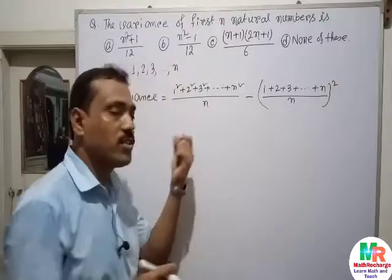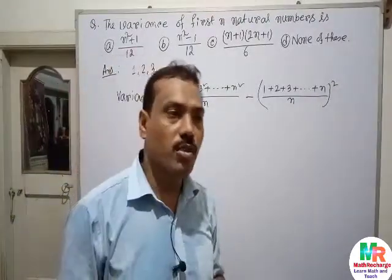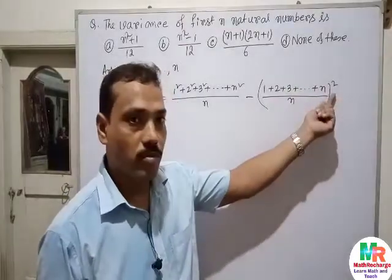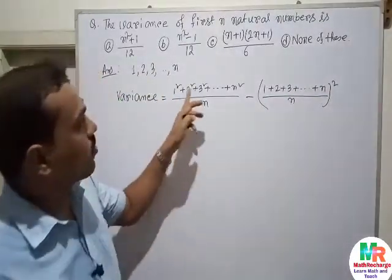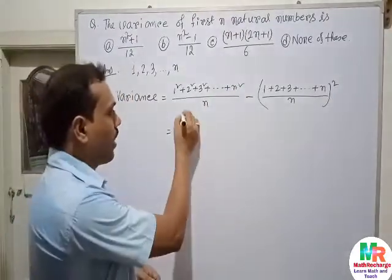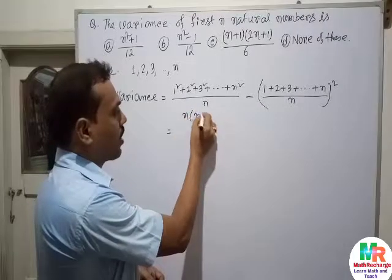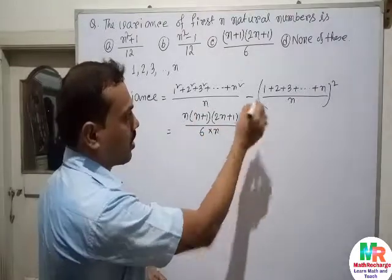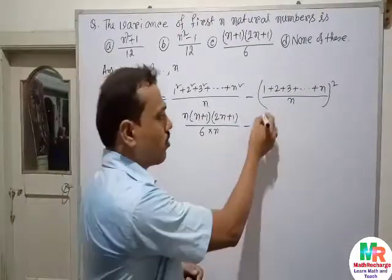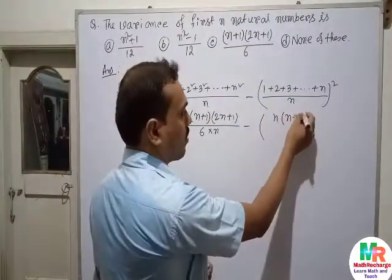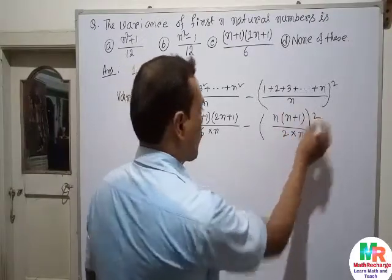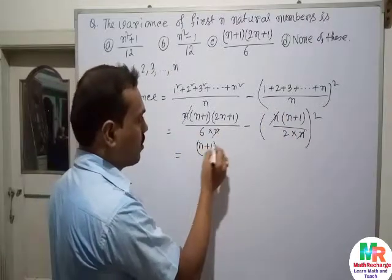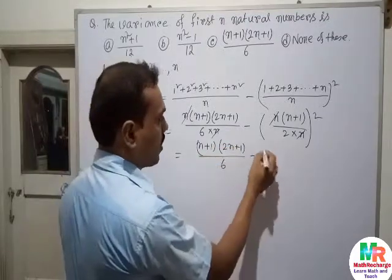Now substituting the standard formulas: the sum of squares is n(n+1)(2n+1)/6, and the sum of first n natural numbers is n(n+1)/2. So variance becomes (n+1)(2n+1)/6 minus [(n+1)/2] squared.